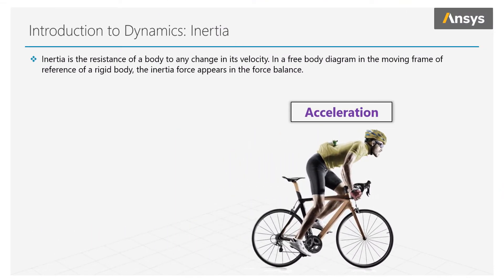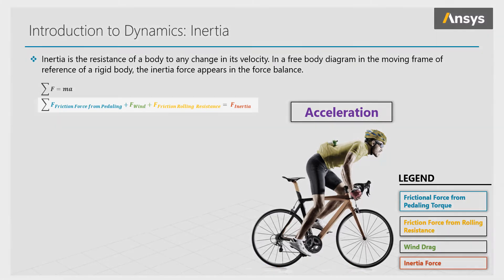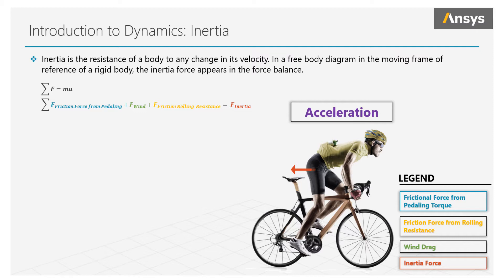Let's use a cyclist to illustrate this concept. A cyclist is accelerating forward from the pedaling torque, which gets translated into a frictional force at the rear wheel pushing the bike forward. But aerodynamic drag from the air or wind drag and even friction from the rolling resistance of the tires are acting in the opposite direction to the forward motion. For the cyclist to accelerate, the friction force from pedaling must be greater than the sum of the drag and the frictional rolling resistance forces. The sum of these forces will equal the inertia force.